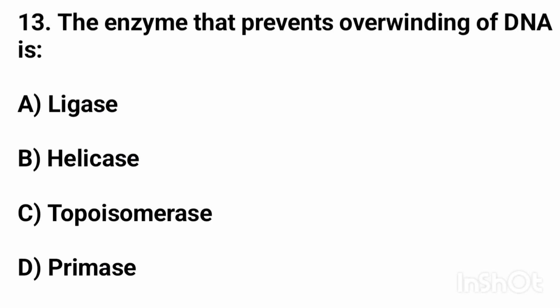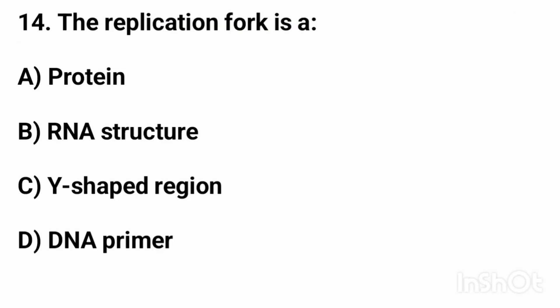Question number twelve: DNA polymerase III in prokaryotes is responsible for? The right answer is option C, DNA elongation. Question number thirteen: the enzyme that prevents overwinding of DNA is? The right answer is option C, topoisomerase II.